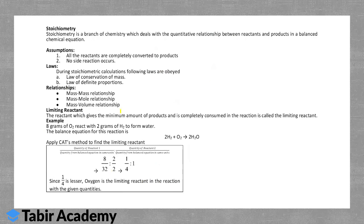Stoichiometry is a branch of chemistry that deals with the quantitative relationship between reactants and products in a balanced chemical equation. Key assumptions: all reactants are converted into products, and there are no side reactions. The laws followed are conservation of mass — mass cannot be created or destroyed, it is just converted — and definite proportion. Stoichiometry covers mass-mass, mass-mole, and mass-volume relationships.